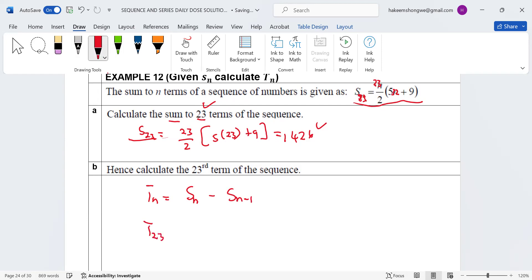Now if we are looking for term number 23, then we'll say we have Tn = S23 minus S22. How can we get 22? We said 23 minus 1. 23 minus 1 is going to give us 22. And then term number 23, that is going to be given by 1426.